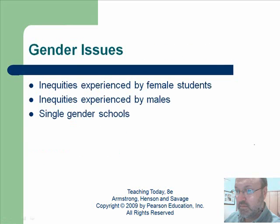Then there are gender inequalities experienced by both female and male students. The underlying attitude was that female students weren't as good in math and science, and male students weren't as good at reading and writing. Awareness of that helps a great deal. Single-gender schools are a big thing now, and the research is becoming more clear that students tend to do better in them — but it's not very politically popular.